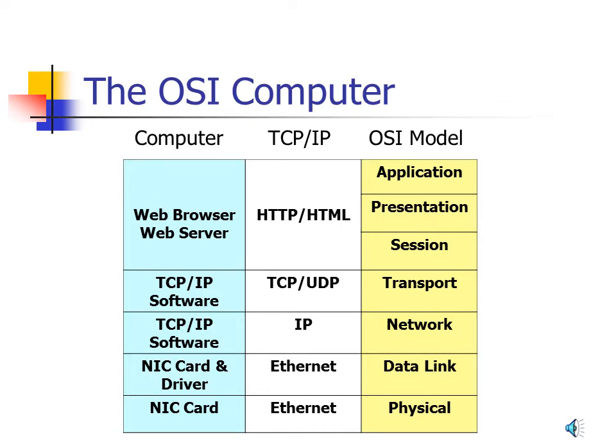Before we start building packets, let's take a look at the OSI model, TCP, and the standard computer. In yellow we have all seven layers of the OSI model. Next to it we have the TCP/IP suite of protocols: at the data link and physical layers we have Ethernet, at the network layer we have IP, at the transport layer TCP and UDP, and at the session, presentation, and application layers we have HTTP and HTML. On the far left we have a functional diagram of a computer, matched up to the portions that provide the TCP/IP functions.